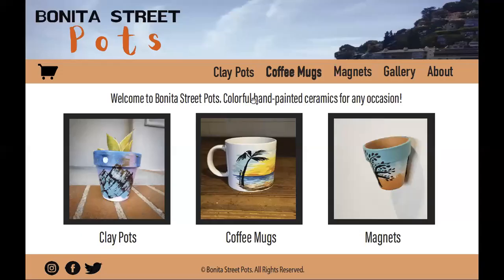Okay, so we can see here we're at the home screen. At the top left corner is the logo for the company, Bonita Street Pots. On the right-hand side, there is the image of Sausalito. It's a little cutoff image there, and you can see that we have the different offerings available via drop-down menus. We've got clay pots, coffee mugs, magnets. There's also a gallery of previously created designs for people to get inspiration and ideas for things they might want to buy. And if you're interested in knowing more about the company, you can click on the About tab.